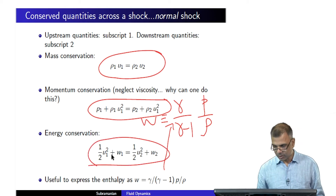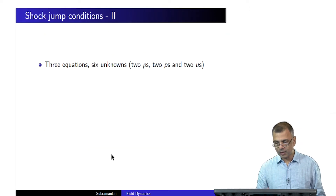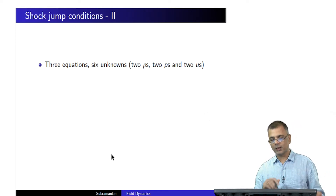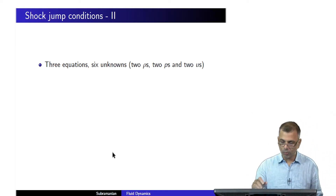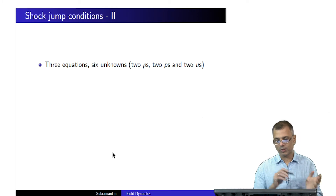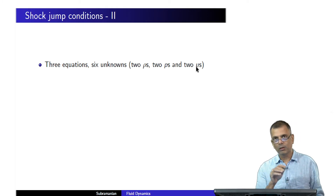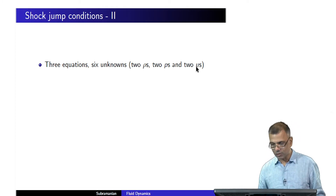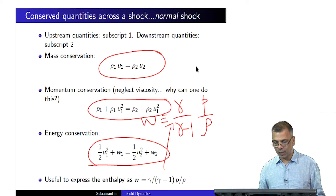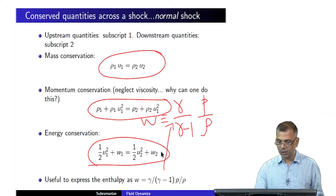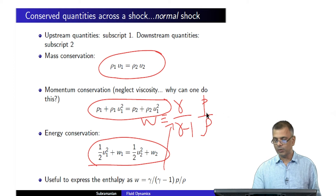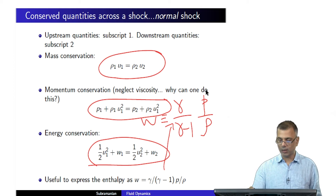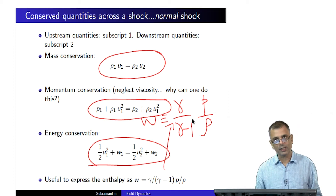We have three equations and six unknowns: two densities (one upstream, one downstream), two pressures (one upstream, one downstream), and two velocities (one upstream and one downstream). If you think that we are introducing a new quantity here — enthalpy — it's not really new. It can be quickly related to the pressure and density.